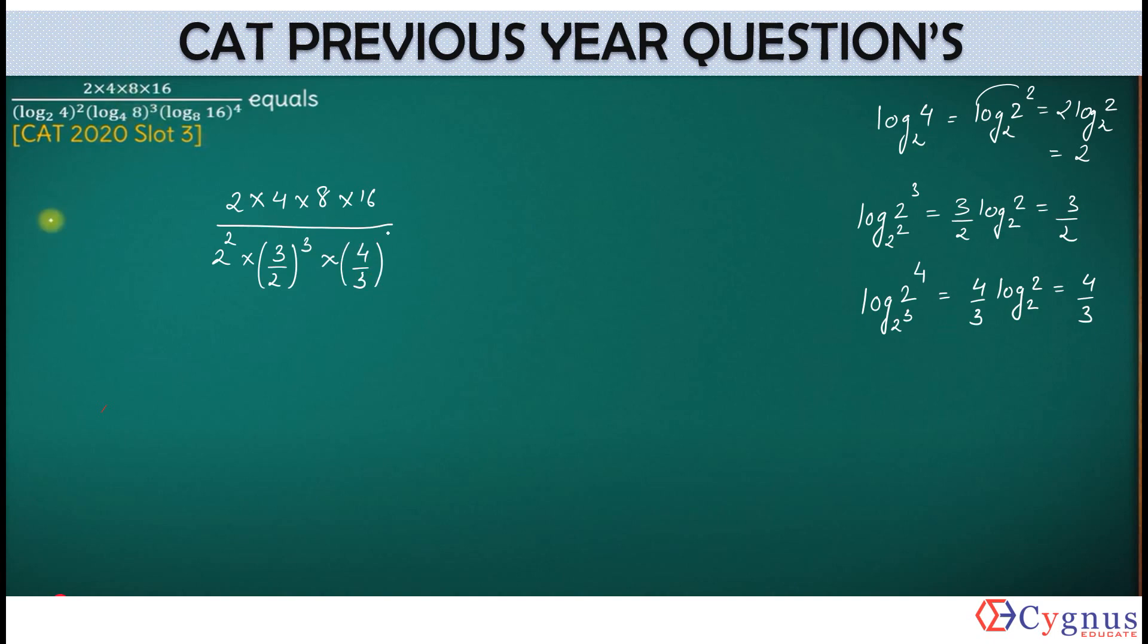I need to simplify this one. Okay. Let's see. 2 into 4 into 8 into 16. This 2 square will give you 4. Denominator 3 cube, that is 27, divided by 2 cube, that is 8. I'll put it in the numerator.